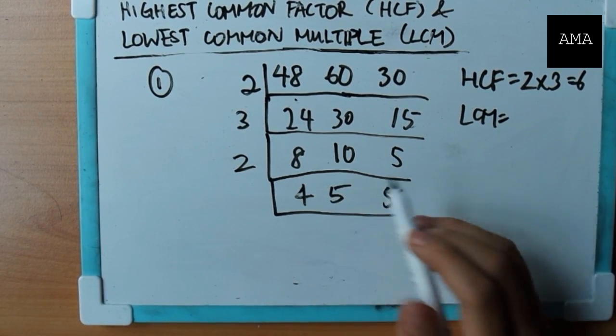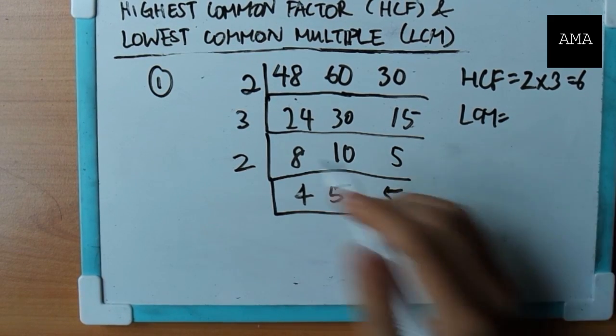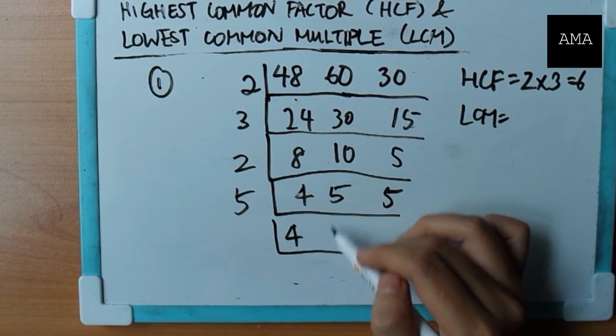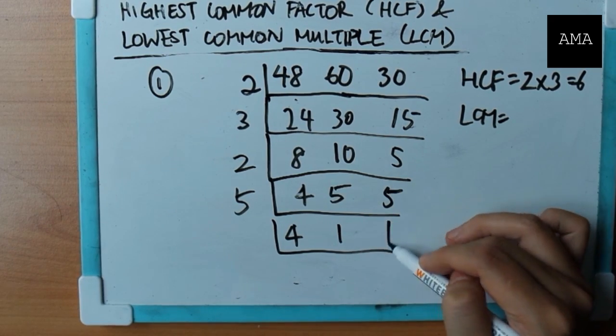Now, four, five, five. So five and five obviously can be divided by five, right? So four, I don't touch it. Five divided by five is one, similar to here.